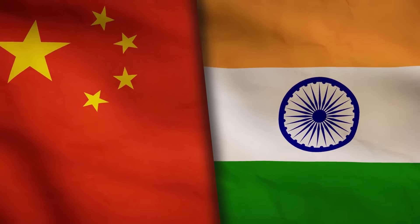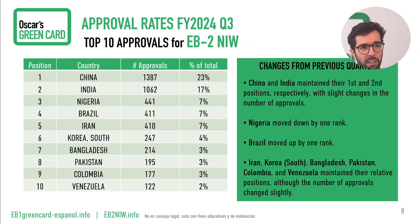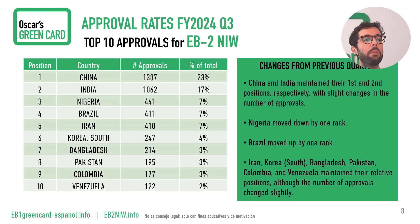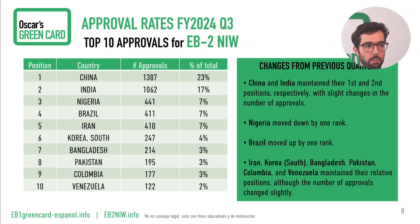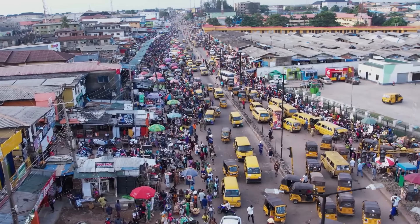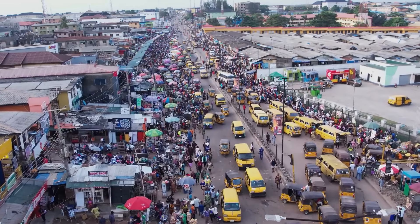In EB2NIW, China and India maintain their first and second positions as well. For China, the number of approvals decreased slightly from around 1,500 in quarter two to 1,387 in quarter three — a reduction of 147 cases. India kept its second position with an increase in approvals from 998 to over 1,000 in quarter three, an addition of 64 cases. Nigeria moved down by one rank from third to fourth, with a significant decrease in approvals from 668 to 441 in quarter three — a reduction of more than 200 cases.